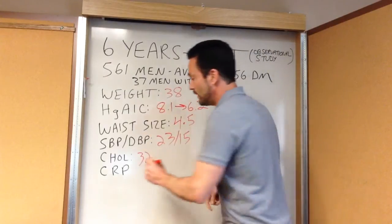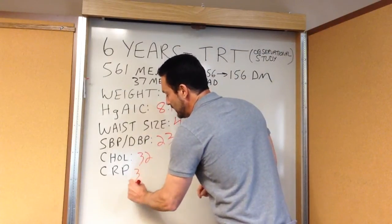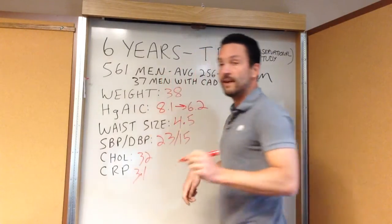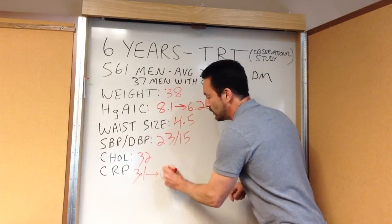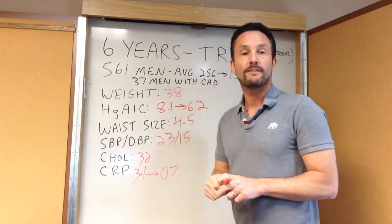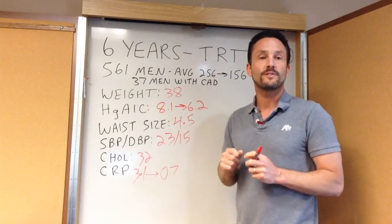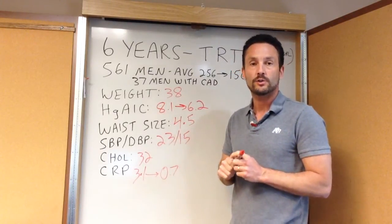Lastly, a marker for inflammation called CRP. This is a marker of cardiovascular inflammation that went from 3.1 to 0.7. If your CRP is above 3, you have a 2.5 to 3-fold increased risk of a heart attack or stroke, above and beyond all of your risk factors.